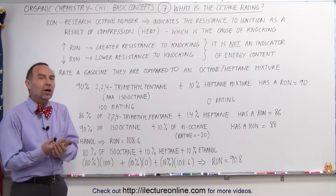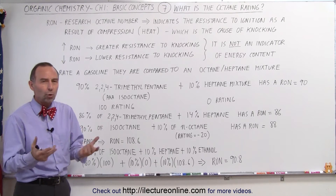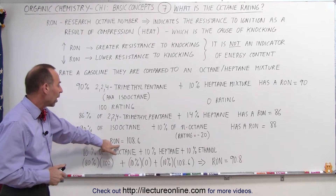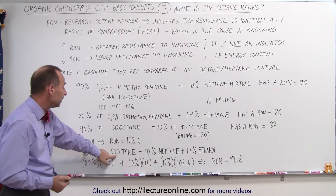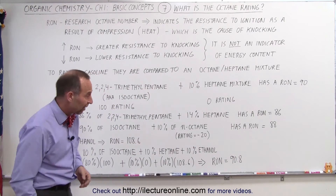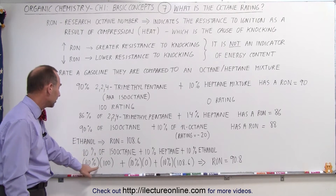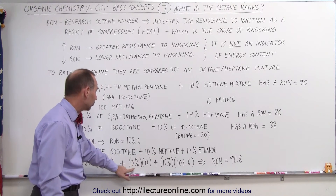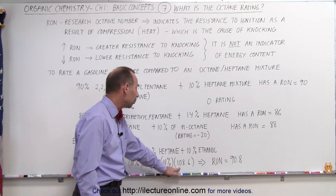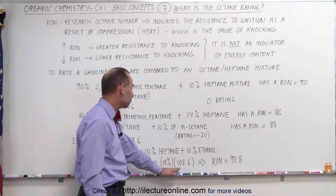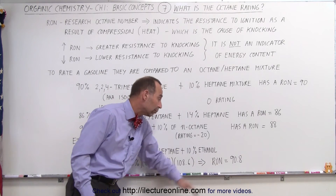And finally, ethanol. Ethanol is something we add to gasoline because we can generate it from growing corn. It has a very high RON of 108.6. So a typical gasoline mixture might be 80% isooctane, 10% heptane, and 10% ethanol. That gives you 80 from the isooctane (80% × 100), zero from the heptane (10% × 0), and 10.86 from the ethanol (10% × 108.6). Adding 80 plus 10.86 gives you a 90.86 octane rating — which would be the higher, more expensive grade of gasoline.